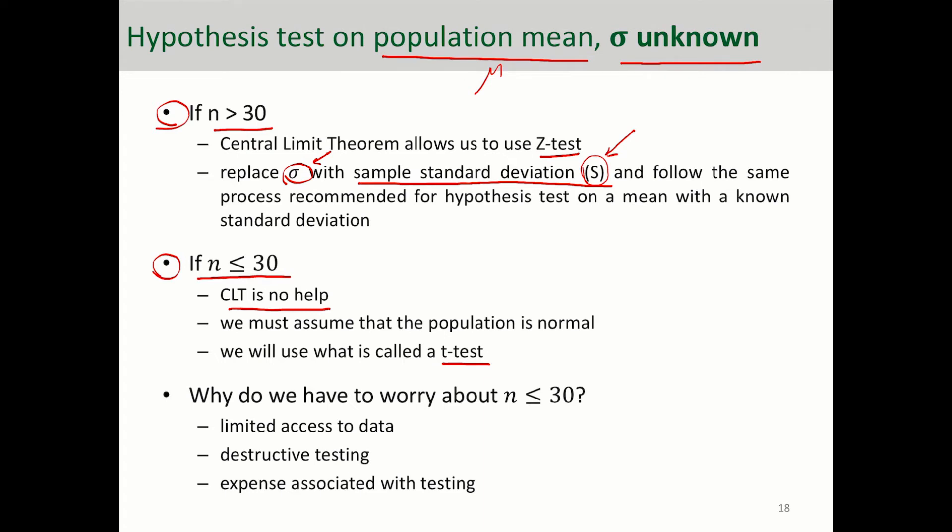But why do we even worry about when sample size is less than 30? Why don't we just increase our sample size and do the z-test? Well, that can be a problem. Increasing the sample size is not always possible. Sometimes you have limited access to data. Sometimes testing and sampling is destructive. For example, if you are testing on strength of material or a certain part under pressure, to collect data, you would have to put that item under pressure and measure the strength when it breaks. So essentially to collect each data point, you would have to destroy a part. So that's destructive testing and is also expensive.